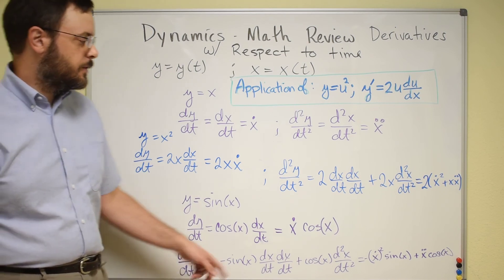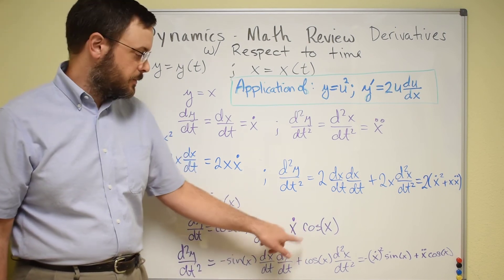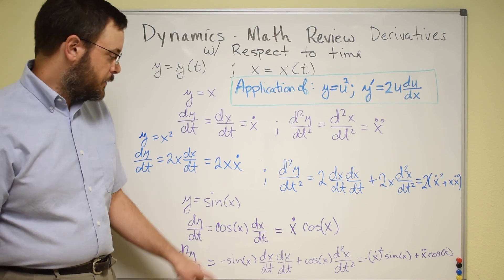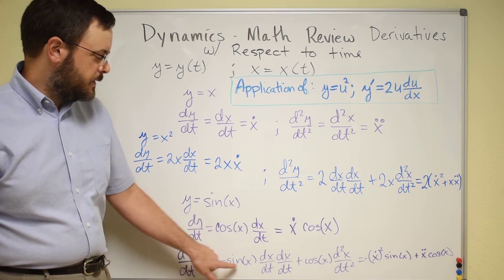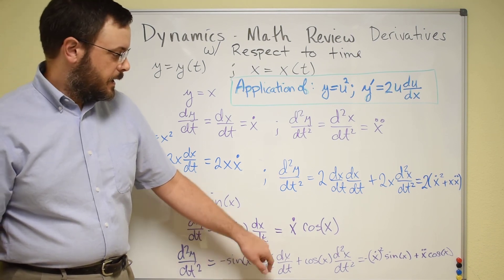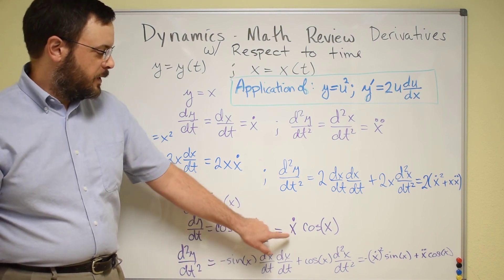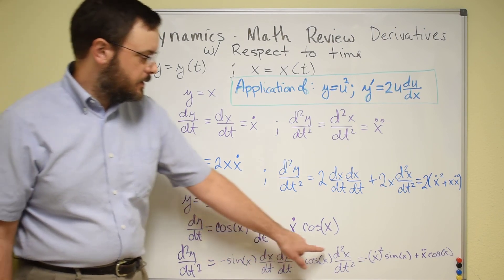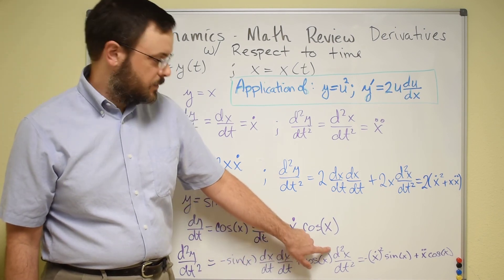Taking a second derivative, again we have a product of 2 terms. Derivative of the cosine is going to give us minus sine. It's going to kick out another dx/dt. Derivative of the dx/dt is going to give us a second derivative of x with respect to time.